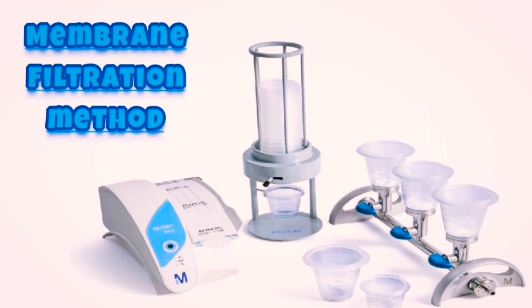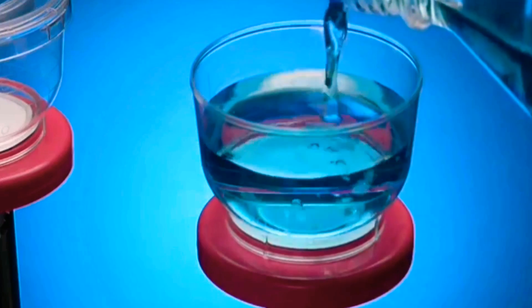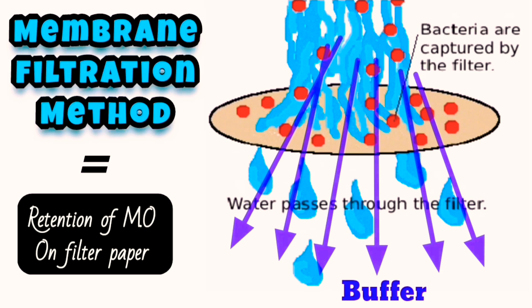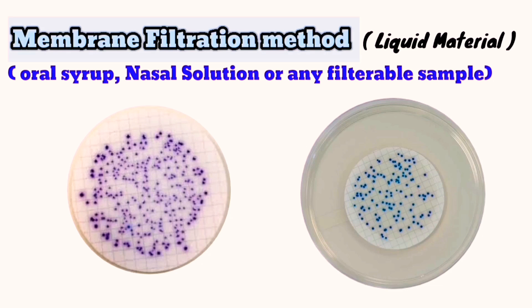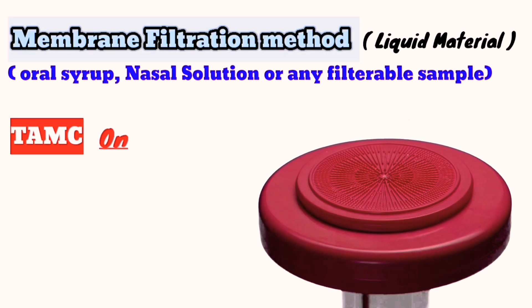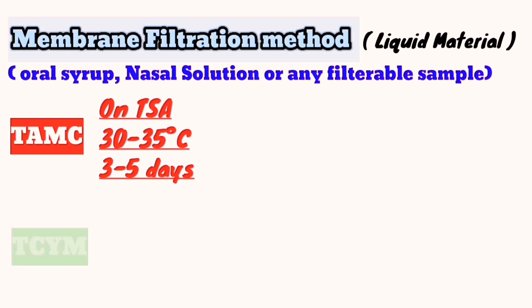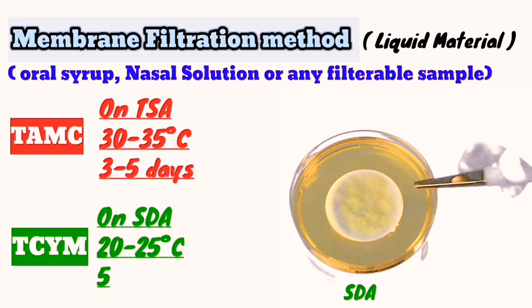The second method is membrane filtration, used for liquid materials such as oral syrup, nasal solution, or any material that can be easily filtered. This method works by retaining microorganisms on a membrane filter and allowing them to grow on tryptone soybean agar or Sabouraud dextrose agar, while the peptone buffer passes through the filter. For total aerobic microbial count, place the filter onto a tryptone soybean agar plate and incubate at 30 to 35 degrees Celsius for 3 to 5 days. For total combined yeast and mold count, place the filter onto a Sabouraud dextrose agar plate and incubate inverted at 20 to 25 degrees Celsius for 5 to 7 days.